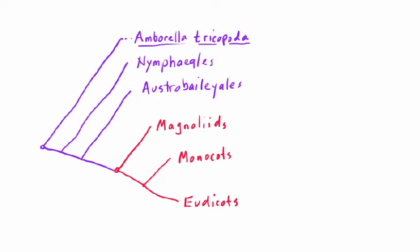Let's start by going over the basic structure of the mesangiosperms, sometimes known as the core angiosperms or the crown angiosperms. This is a group that you're left with after the ANA-grade angiosperms — the Amborella, the Nymphaeales, and the Austrobaileyales — have split away.